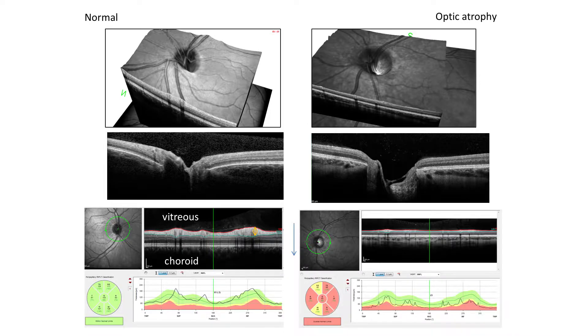RNFL thickness was assessed using optical coherence tomography, which is a non-invasive imaging modality using near-infrared light to provide micrometre-scale measurements of the retinal architecture, and is sensitive to small changes in the thickness of the nerve fibre layer, which can indicate axonal injury in the anterior visual pathway.